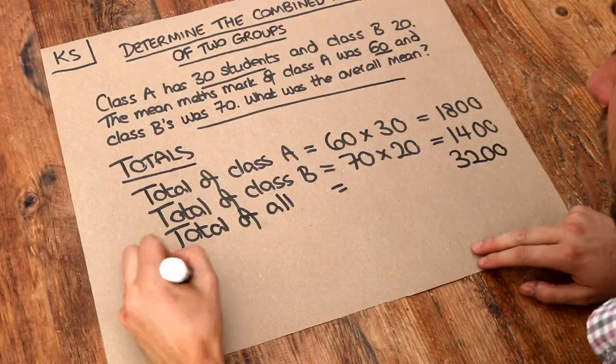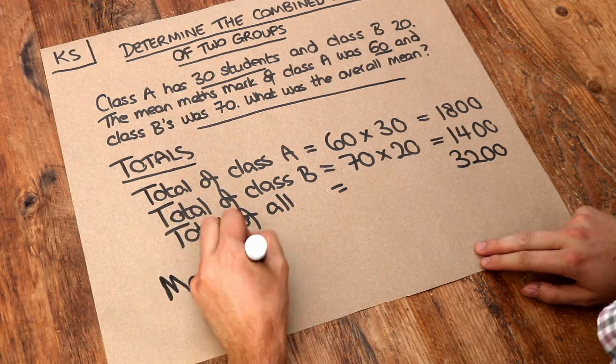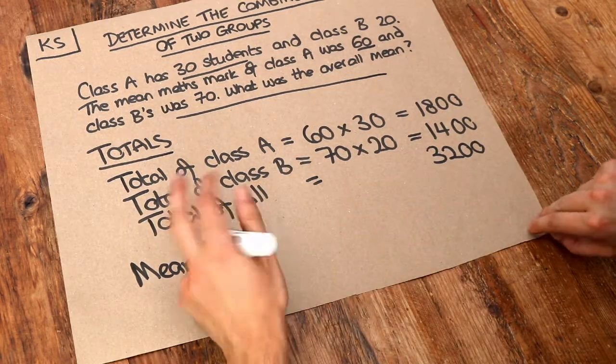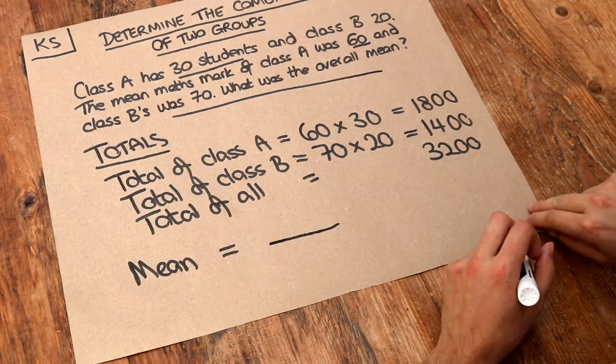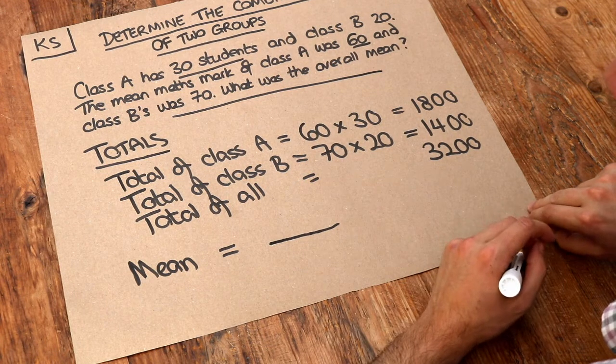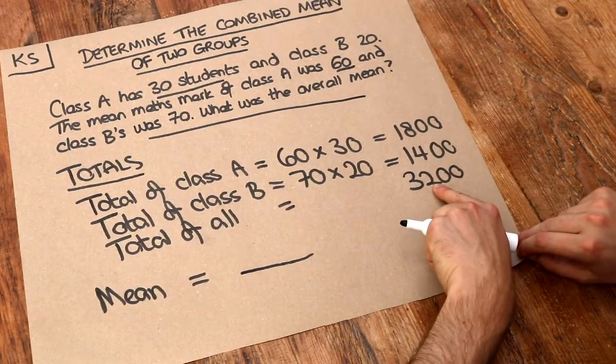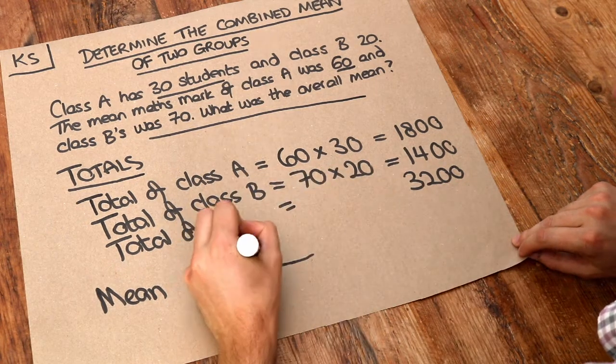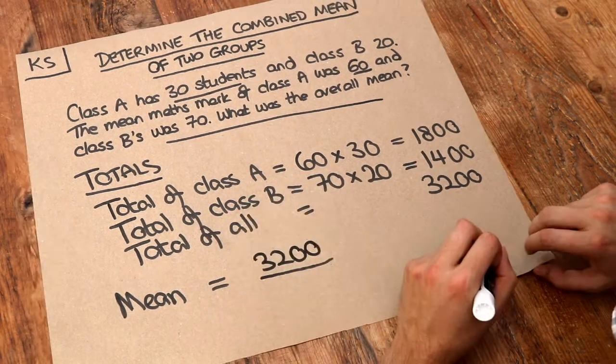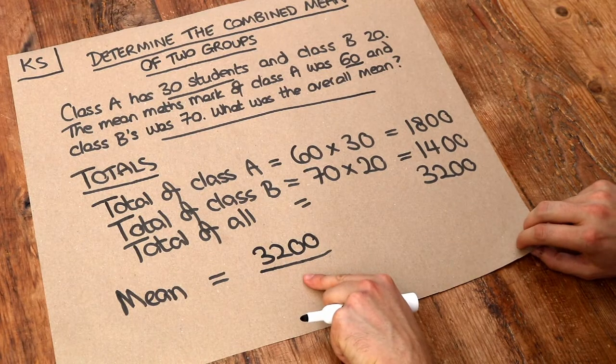And therefore the mean of both classes is going to be the total mark of everyone divided by how many people there were. That's how we calculate the mean. So the total mark of both classes we can see is 3,200 and we divide that by how many people there are in total.